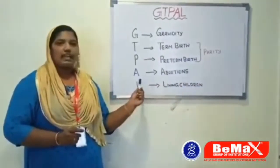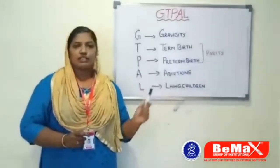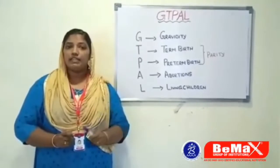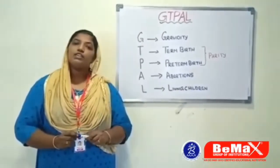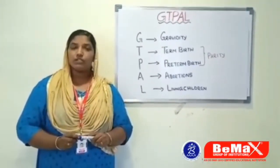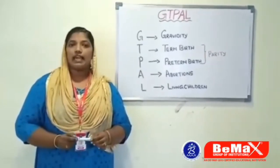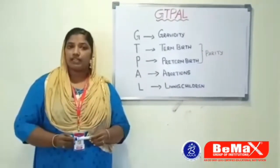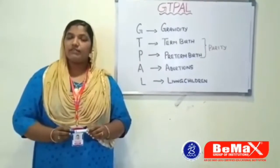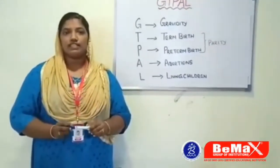The next letter is A. A means the total number of abortions. Abortion means termination of pregnancy which occurs before 20 weeks of gestation — it may be a miscarriage or a spontaneous abortion. So any pregnancy terminated before 20 weeks of gestation counts here.